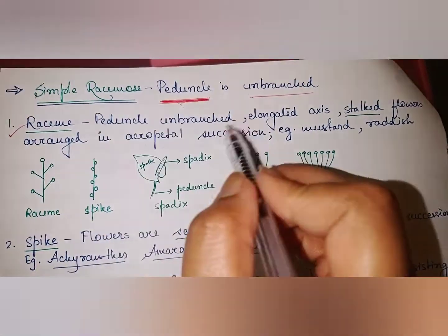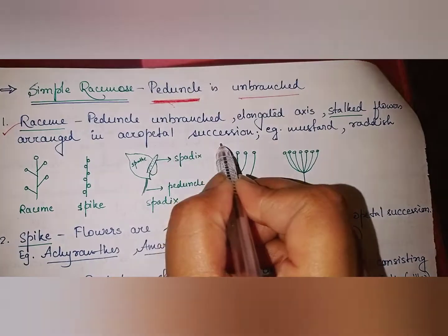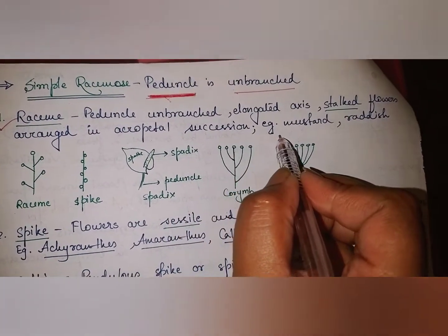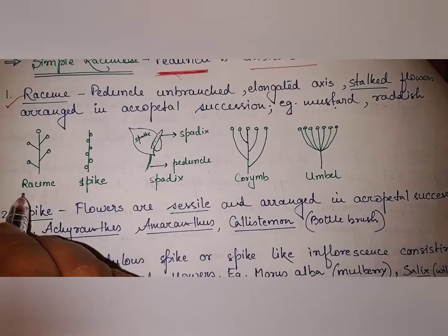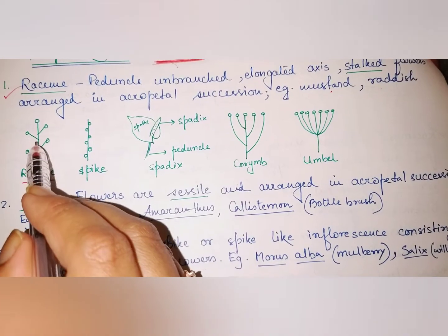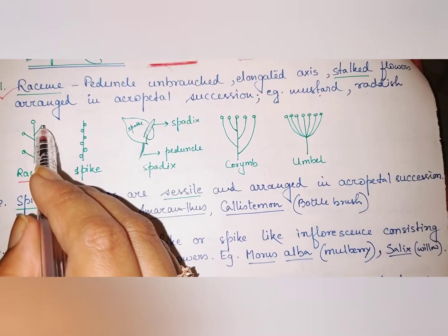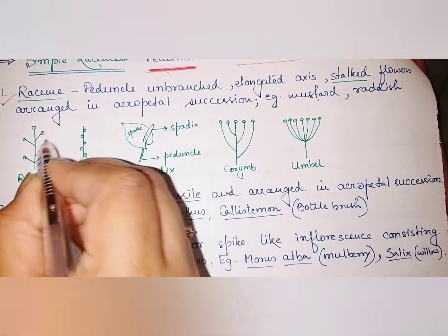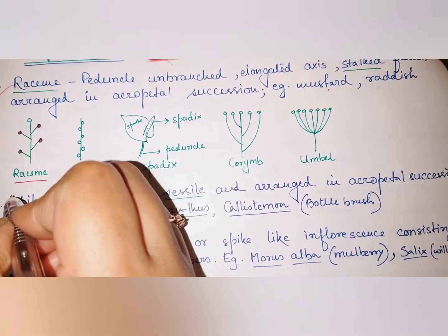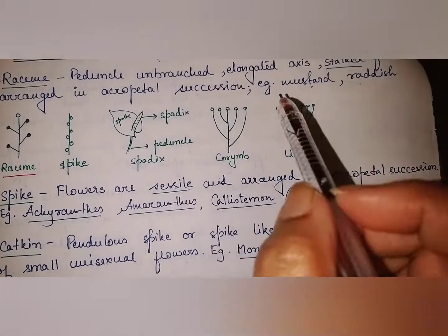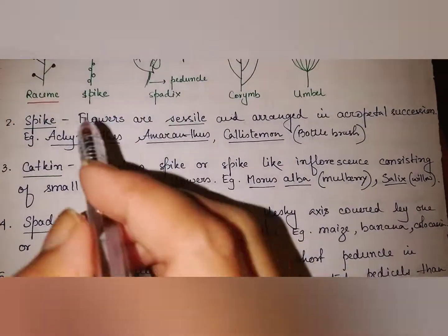First is raceme: the peduncle is an unbranched elongated axis, and stalked flowers are arranged in acropetal succession. The flowers are pedicellate — they have stalks. Examples include mustard and radish. You will see this in mustard, radish, and similar plants.